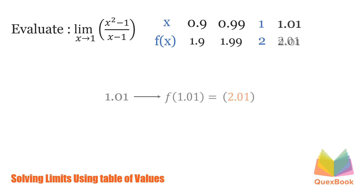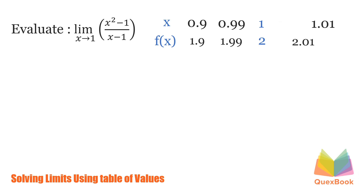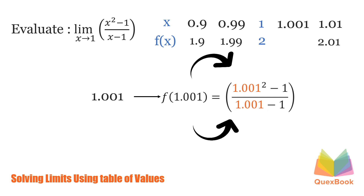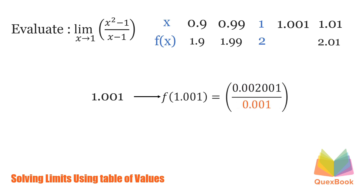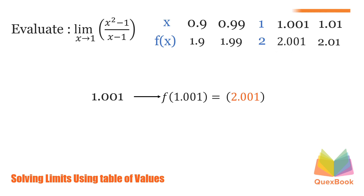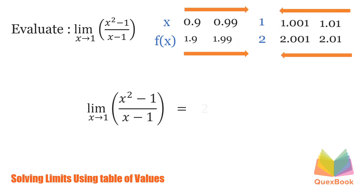Now a number much closer to 1 — 1.001. 1.001 squared minus 1 over 1.001 minus 1. 1.001 squared is 1.002001, minus 1 is 0.002001. Now, 1.001 minus 1 is 0.001. Dividing the function, we'll have 2.001. So it's clear that as our x approaches 1, the limit of our function gets closer and closer to 2. Therefore, the answer for this problem is 2.